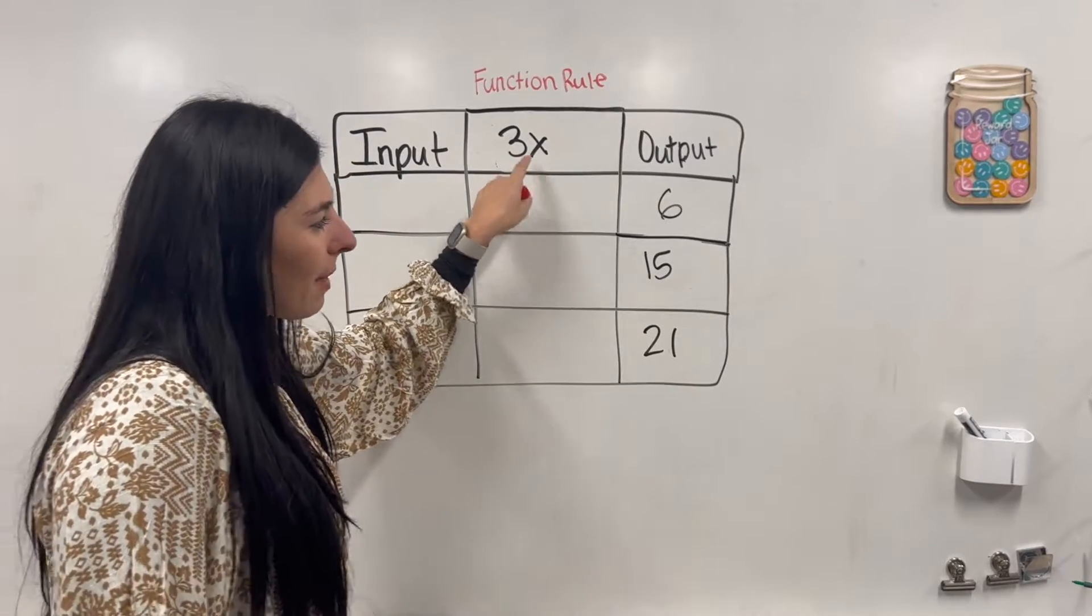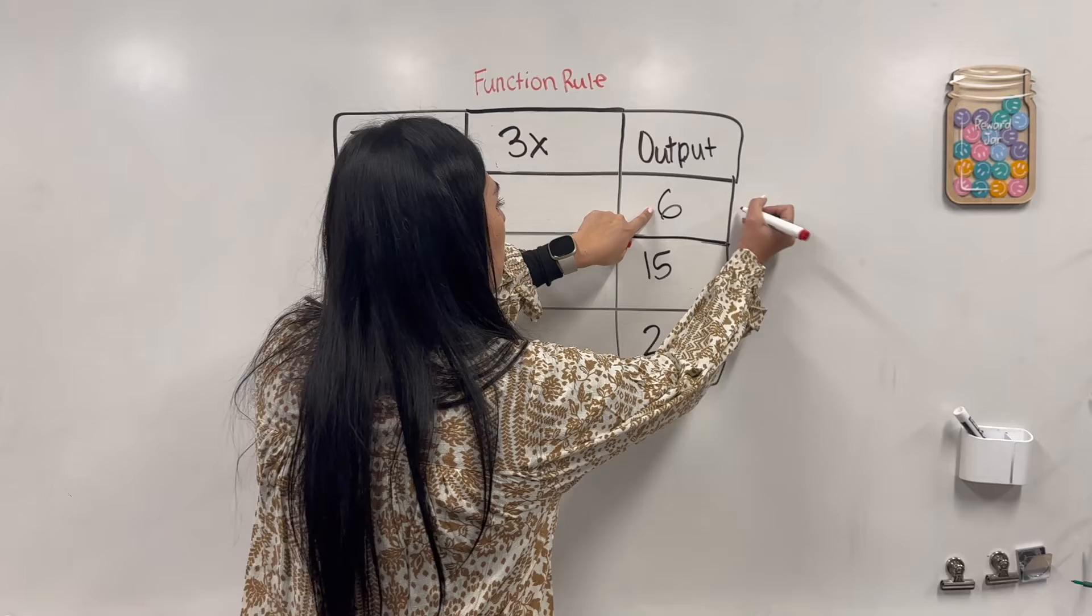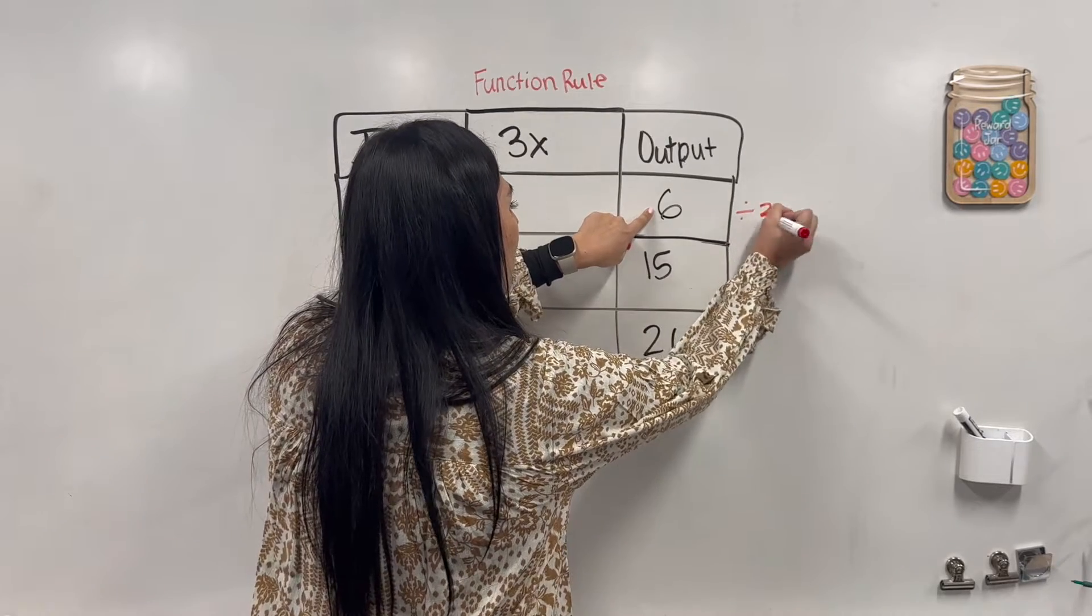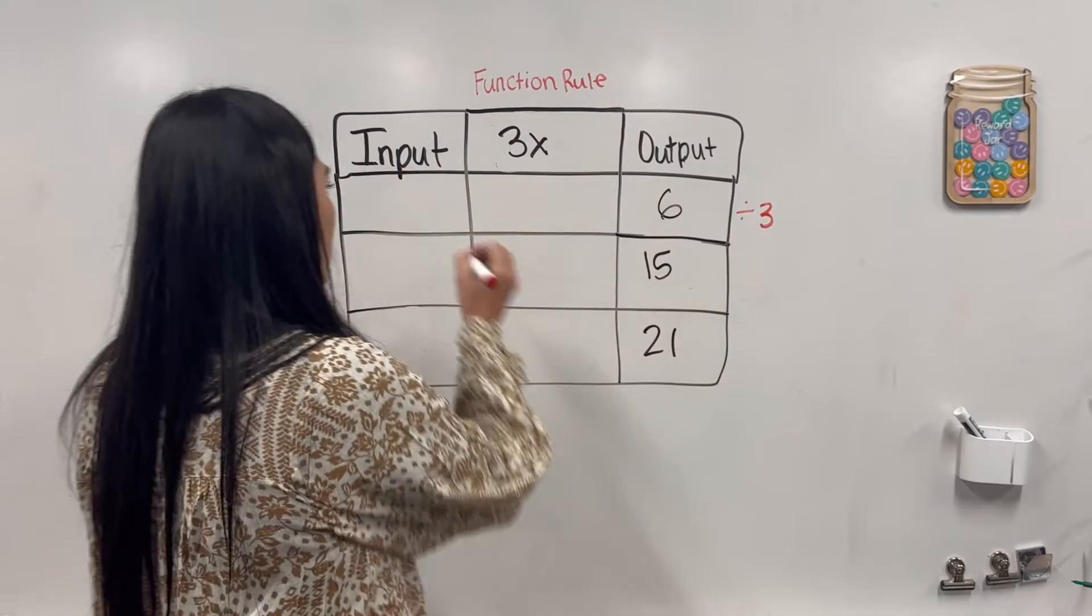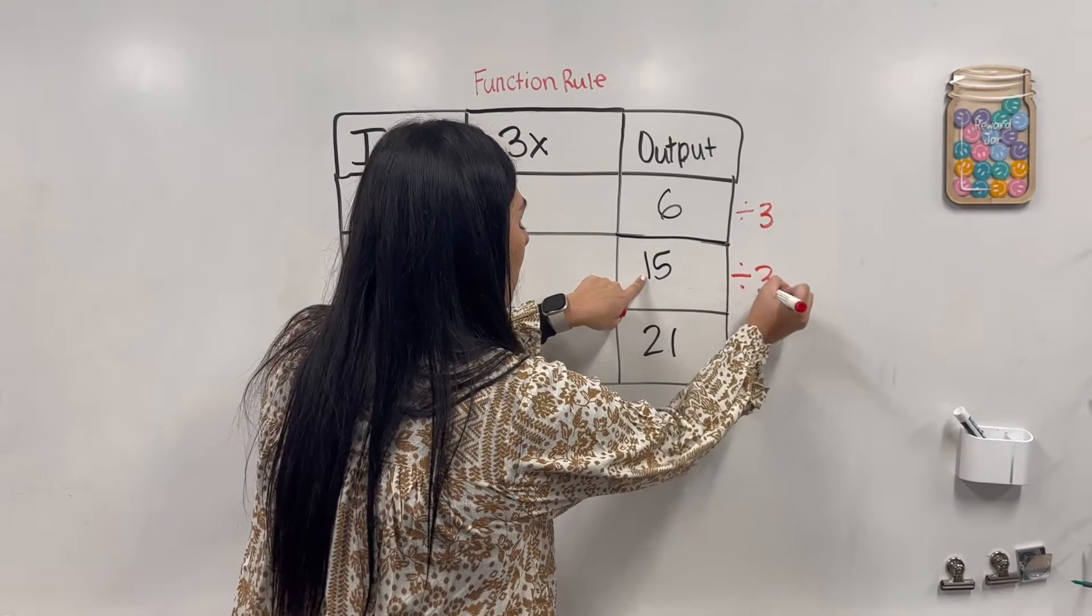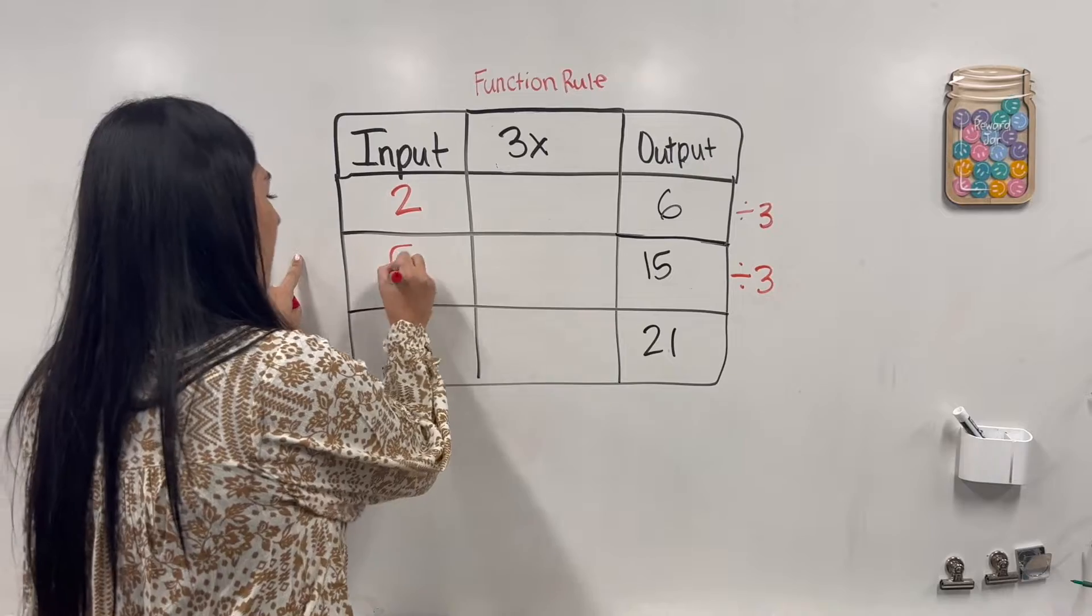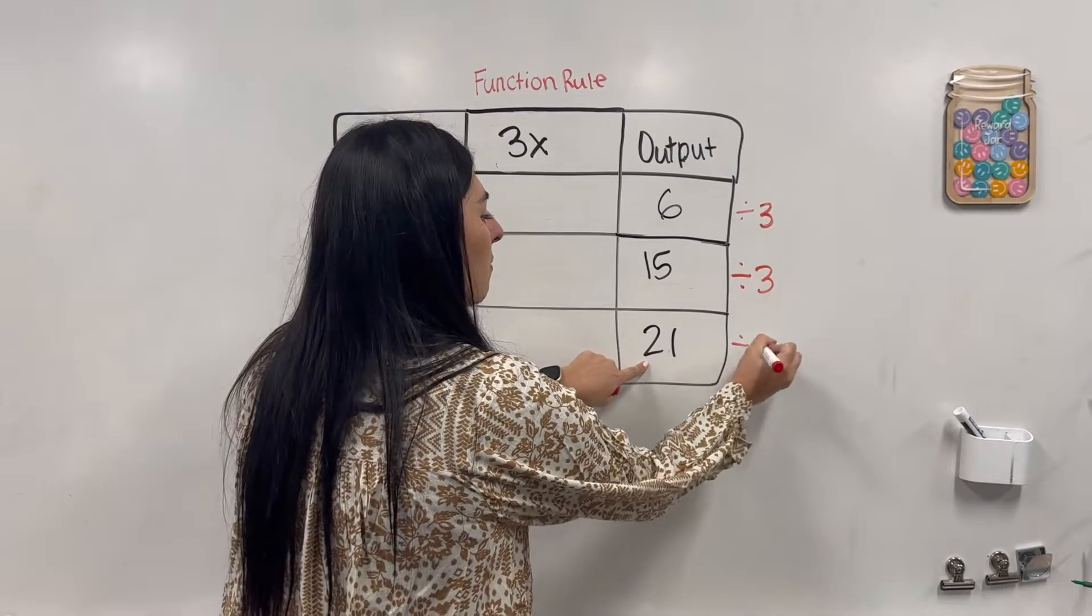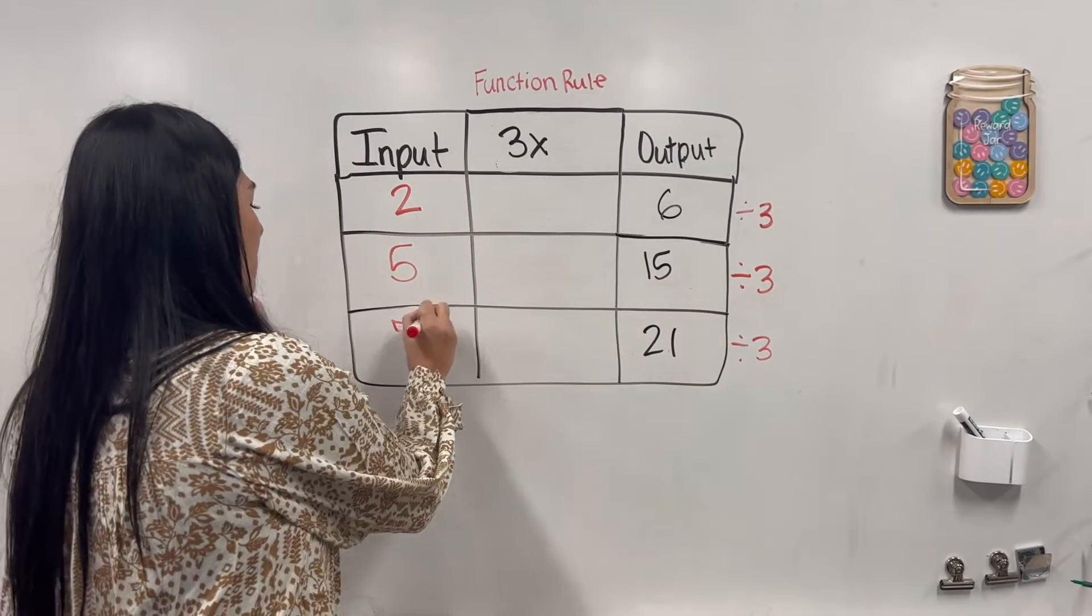So instead of multiplying by 3, I'm going to take this number and I'm actually going to divide by 3, which gives us 2. I'm going to do 15, divide by 3, which gives us 5. And 21, divided by 3, gives us 7.